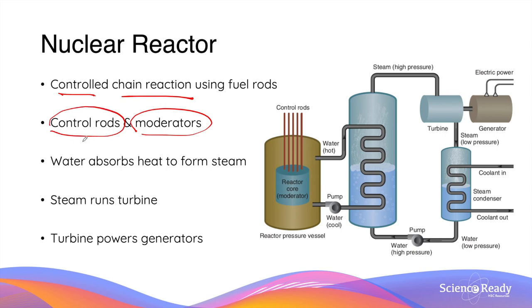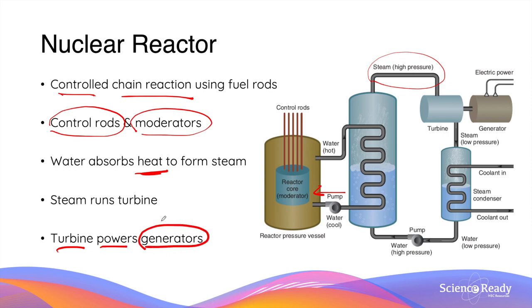Control rods absorb neutrons and reduce reaction rates, while moderators slow down neutrons from nuclear fission and increase the efficiency of the overall reactions. The energy produced from fission is in the form of heat, and this is absorbed by cool water pumped into the nuclear reaction chamber. When the water absorbs the heat from fission, it is turned into steam, which is then used to power a turbine, and the turbine in turn powers generators that convert mechanical energy into electricity. The steam, once used to power the turbine, is cooled and condensed back into liquid water, which is reused by pumping it back into the nuclear reactor. It is important to understand that this water cannot be discarded, as it is not only thermally polluted but also contaminated with a great amount of radiation. This concludes the video on nuclear fission.